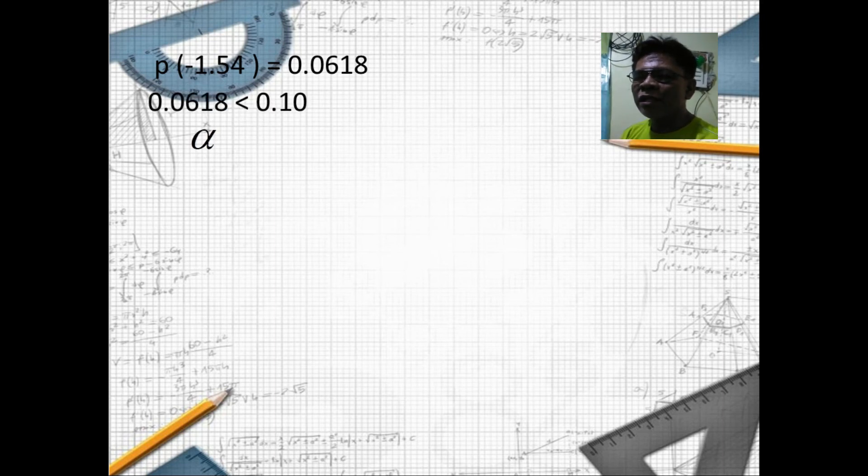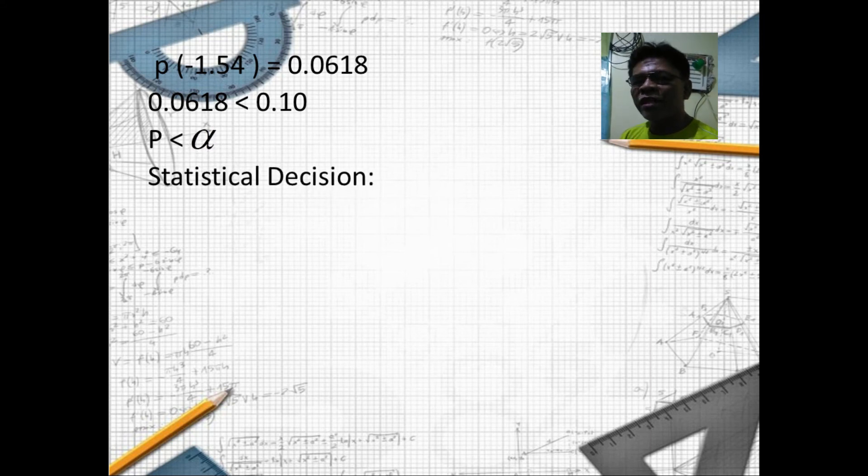0.0618 is less than 0.10, and 0.10 is our alpha. So our probability or our p is less than alpha. By this we can make now our decision.